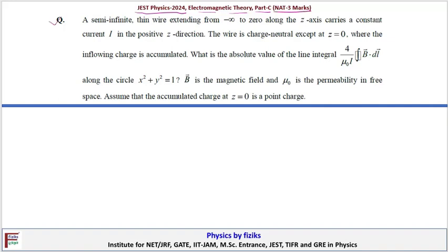In this question it is given that a semi-infinite thin wire extending from minus infinity to zero along the z-axis carries a constant current I in the positive z direction.